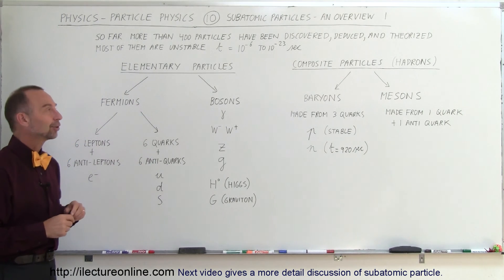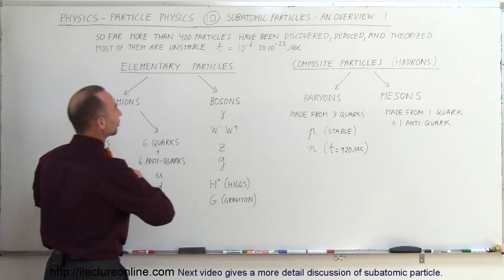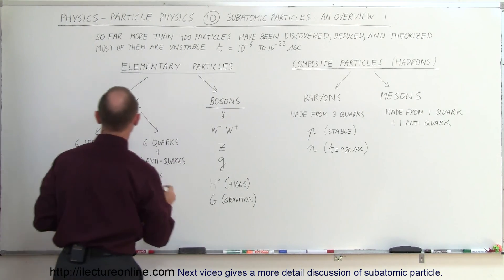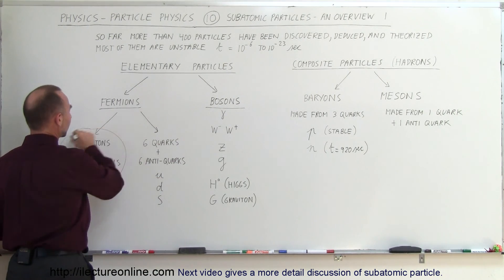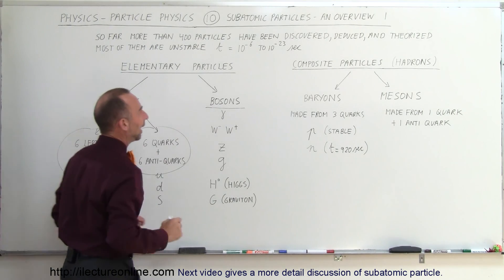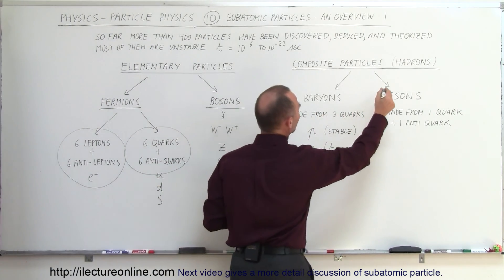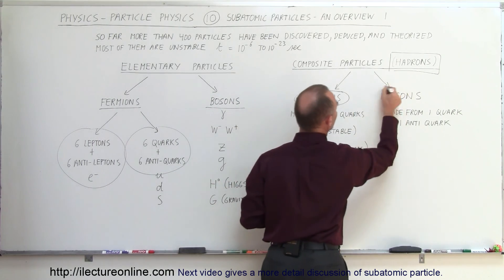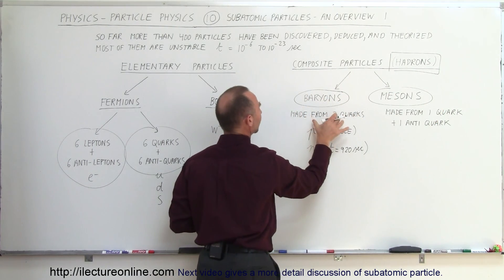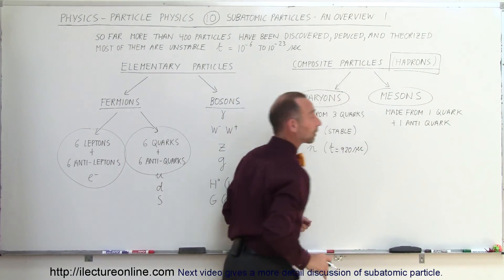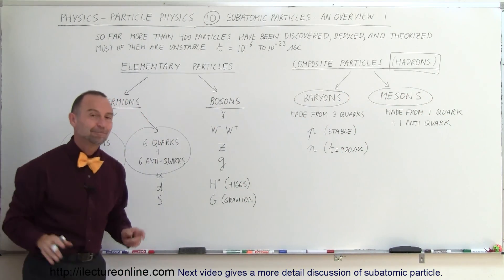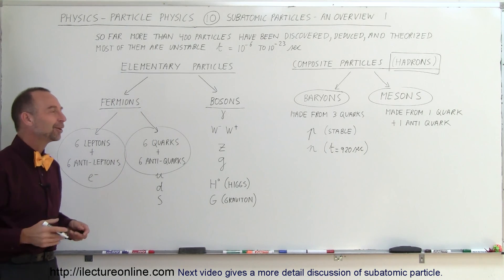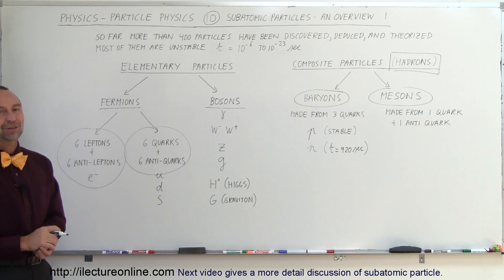So hopefully this makes it clear to you. We have elementary particles and composite particles. Elementary particles are made out of either fermions or bosons. The fermions are subdivided into leptons and quarks. And then on the composite particles, which are called hadrons, they come in two different forms. They come in baryons and they come in mesons. The baryons are made of three quarks. The mesons are made of a quark and an antiquark. And if you can remember that, you'll be able to read a lot more literature and see the next videos and understand a little bit better what subatomic particles are.